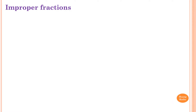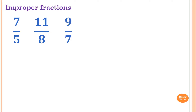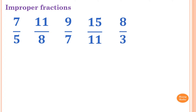An improper fraction is when the numerator is larger or equal to the denominator. For example, 7 over 5 — 7 is larger than 5 — 11 over 8, 9 over 7, 15 over 11, 8 over 3, or 17 over 17, and so on.